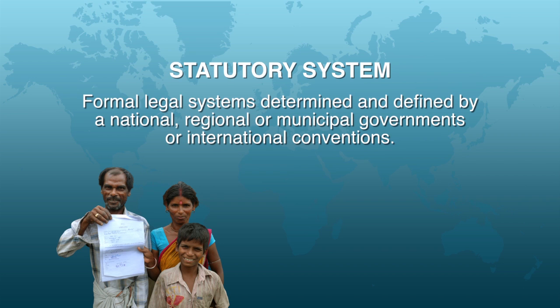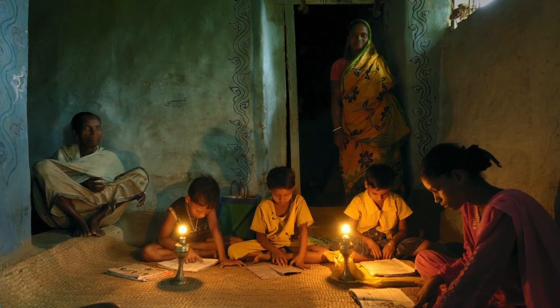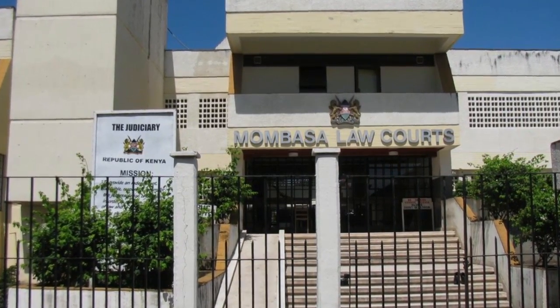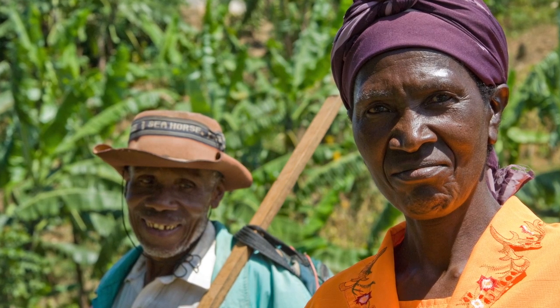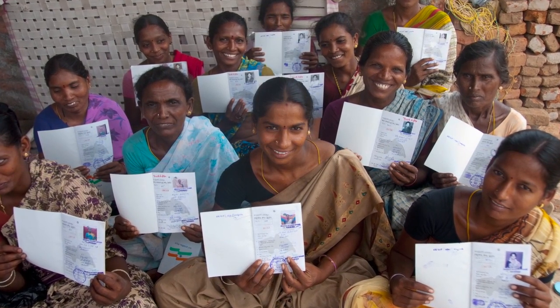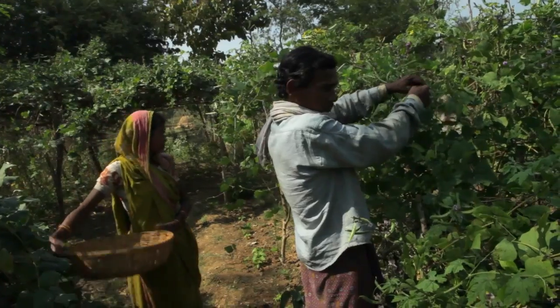Statutory systems refer to formal legal systems determined and defined by national, regional, or municipal governments or international conventions. Since customary systems are based on traditional, religious, or cultural structures, these rights may not be consistent with a country's statutory laws and regulations. A key development concern is determining ways to balance the two systems. What's the best way to harmonize customary rights — how traditional communities have managed and allocated land — versus statutory rights, the formal law of the nation? Often, what's in statutory law is not consistent with customary law, and sometimes it is in conflict.